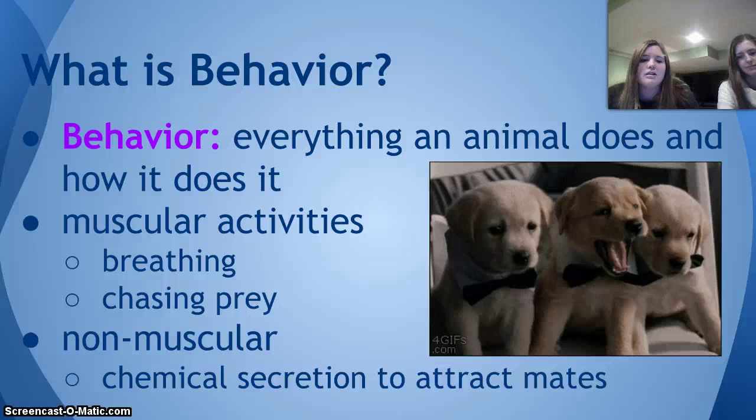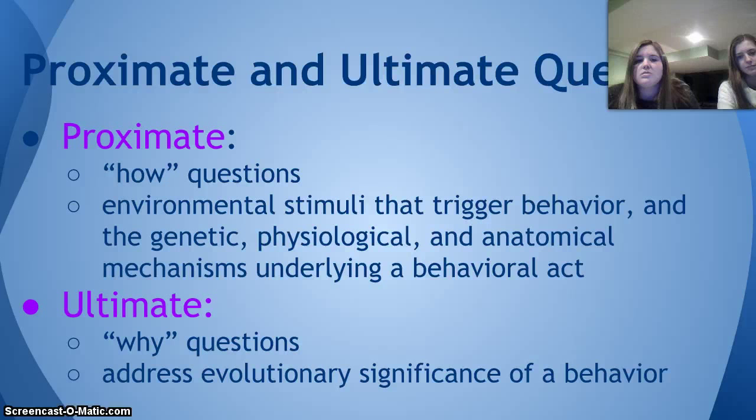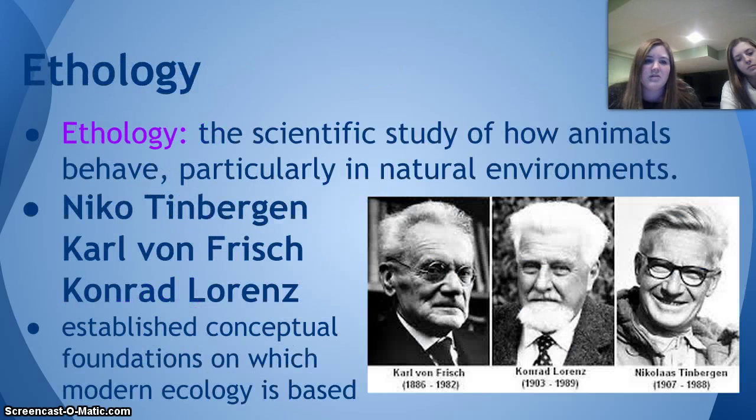There are two questions to ask about how and why animal behavior happens. The proximate questions are the 'how' questions, dealing with the mechanisms underlying the behavioral act, and the ultimate questions are the 'why' questions, which address the evolutionary significance of the behavior.